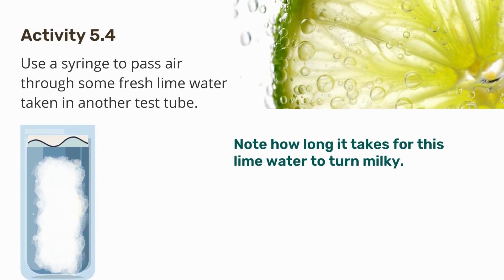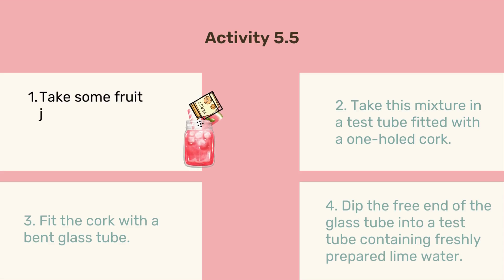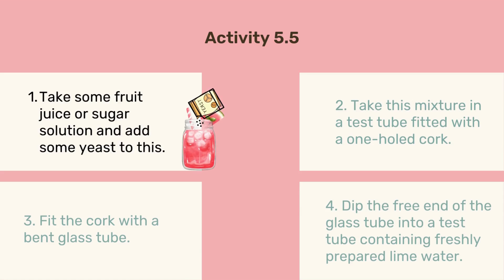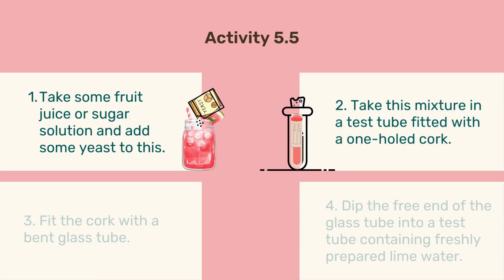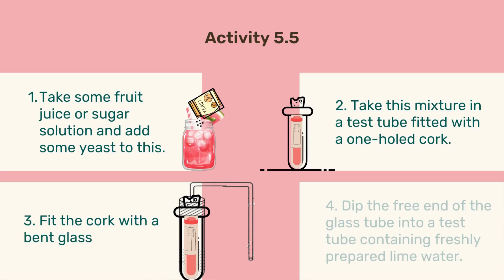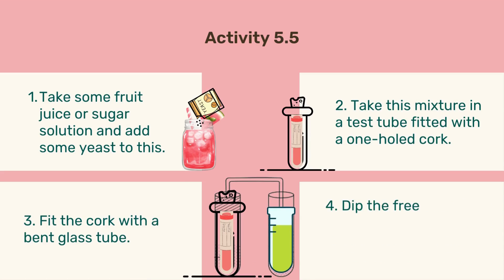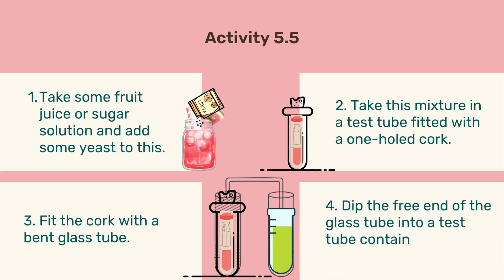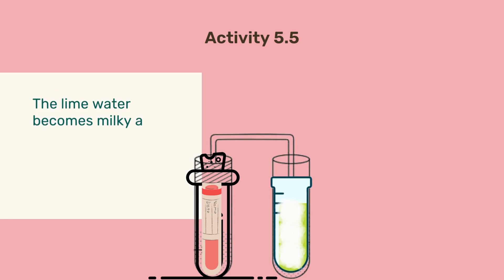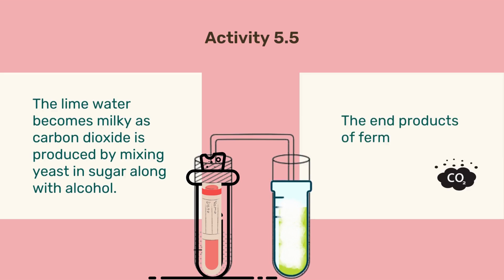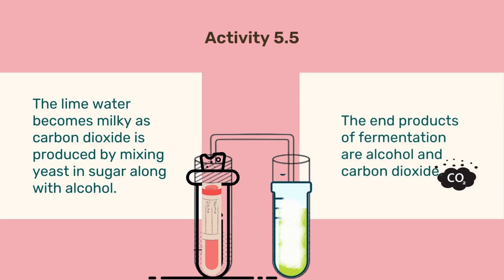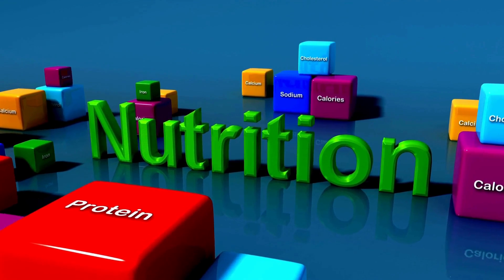Let's perform one more activity. Take some fruit juice or sugar solution and add some yeast to it. Take this mixture in a test tube fitted with a one-hole cork fitted with a bent glass tube, and dip the free end of the glass tube into a test tube containing freshly prepared lime water. You would see the lime water becomes milky as carbon dioxide is produced by mixing yeast in sugar, along with alcohol. The end products of fermentation are alcohol and carbon dioxide.